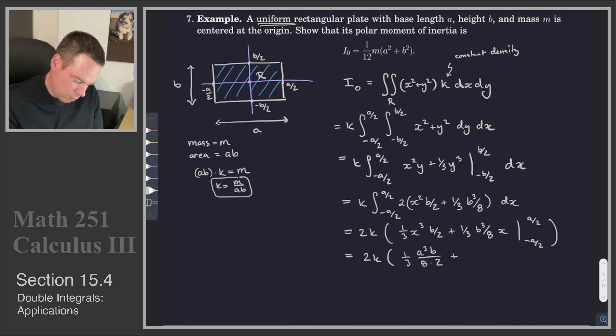Then we plug in the A/2 into the next one. That's (1/3)(B³/8)(A/2). And then again, we plug in the lower limit of integration, but it's going to be minus those things, which end up giving us the same value, so we get twice the value we got at the upper limit of integration. So I'll change that number out front to a 4.